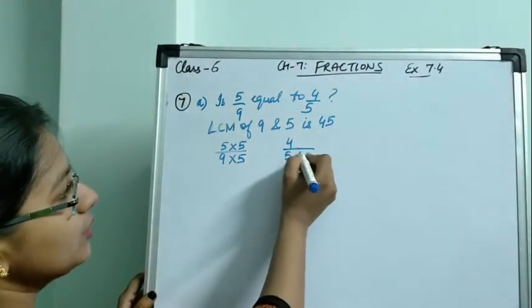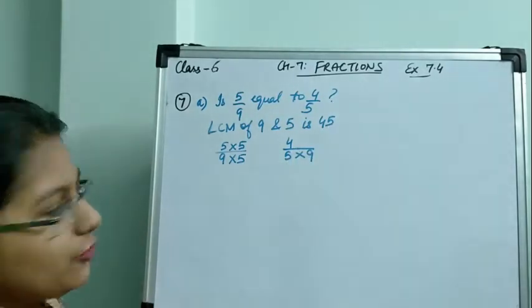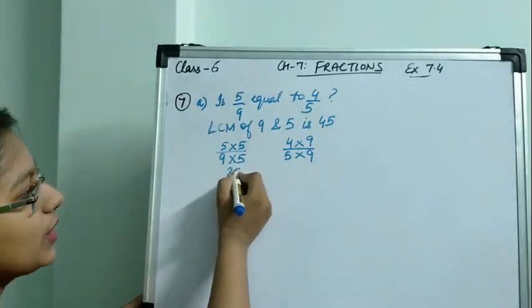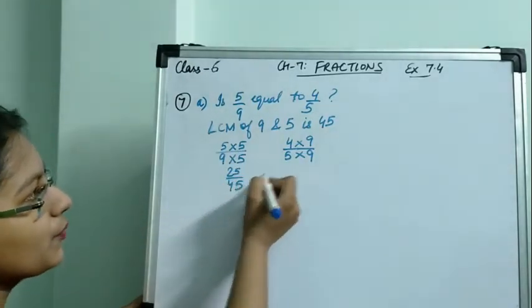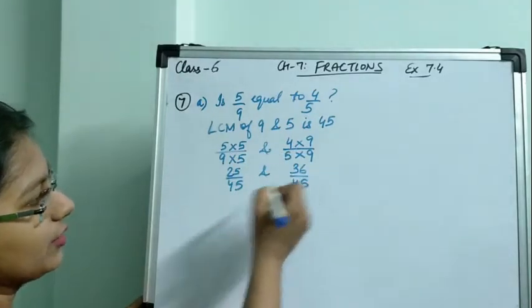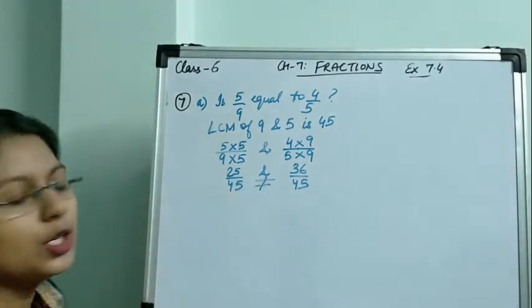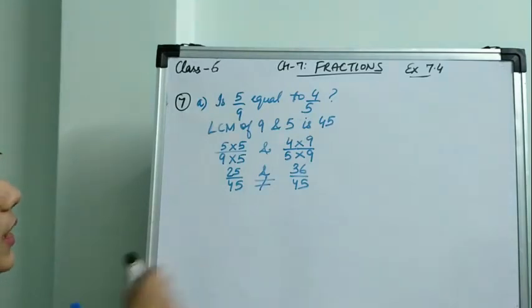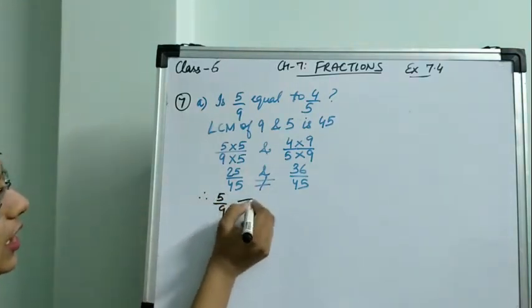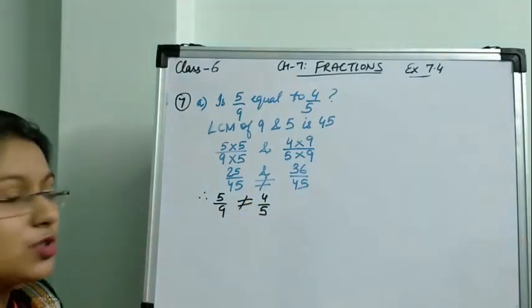If the denominator is multiplied by 5, the numerator should also be multiplied by 5. Similarly, for 4 by 5, multiply 5 by 9 to get 45, so 4 should also be multiplied by 9. This gives 25 by 45 and 36 by 45, which are not equal. Therefore, 5 by 9 is not equal to 4 by 5.